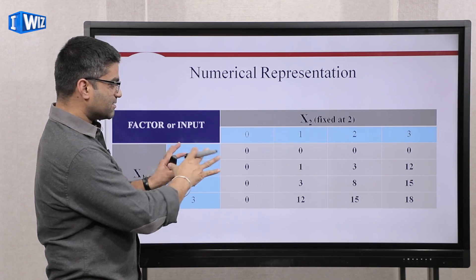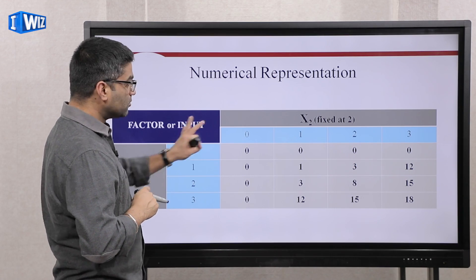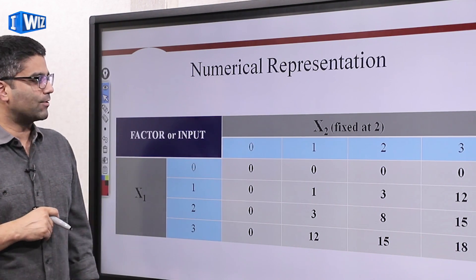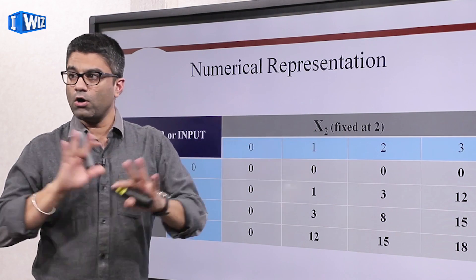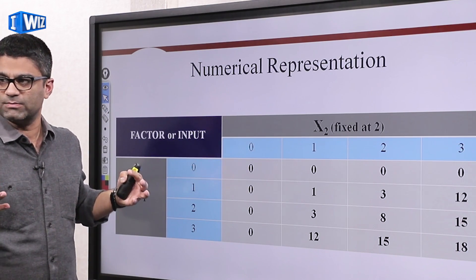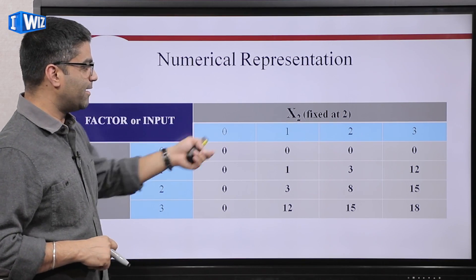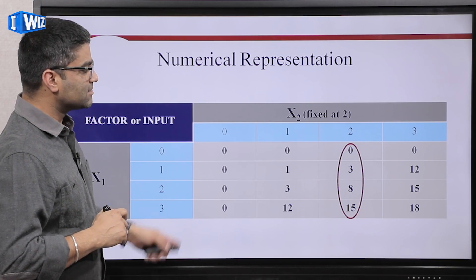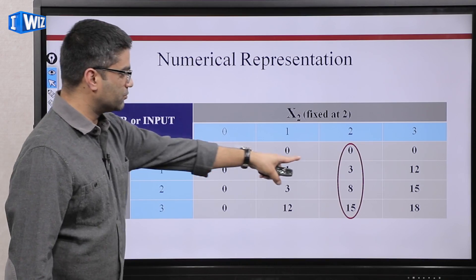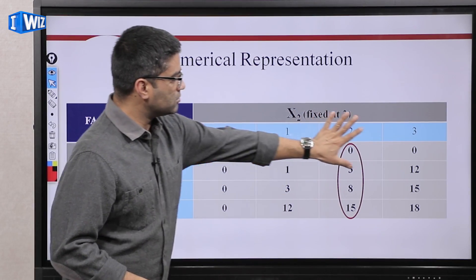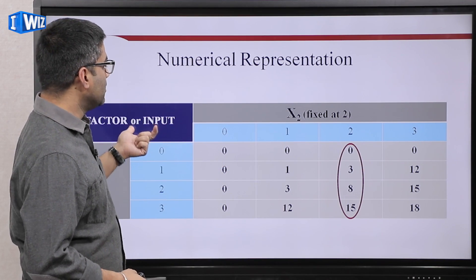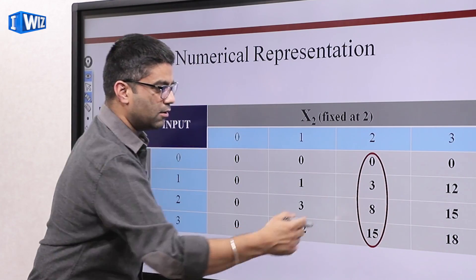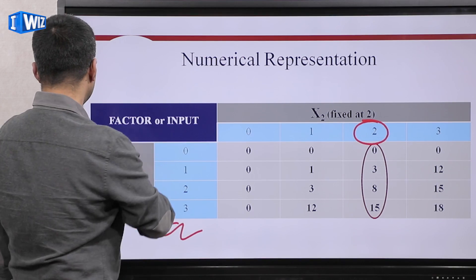Let's do a numerical example using the same table from the previous video, which shows two inputs and how much output they produce for all combinations. Now if we keep x2 fixed at two — say x1 is labor and x2 is capital — we're saying the number of machines is fixed at two, and all the baker can do to produce more is hire more people. So we're only looking at that column. With two machines: one person produces 3, three people produce 15. All other combinations are not relevant. That's what total product of x1 means.